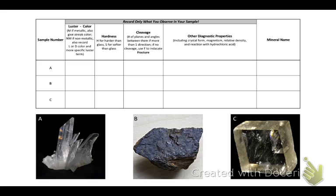You will see on the bottom of the screen we have three minerals, A, B, and C, which we are going to use as examples to show you how to fill in this chart. Starting with mineral A, when we examine it, we discover that it has a non-metallic luster, so you would write NM in the luster field. We also note that it is light colored, so you would write L. And finally, we identify the specific luster, which is vitreous or glassy, so you would write V.